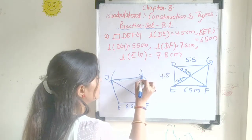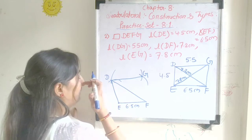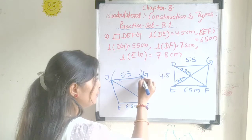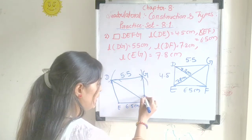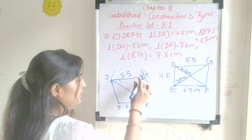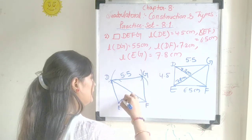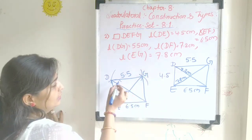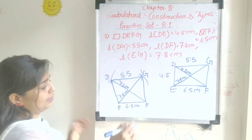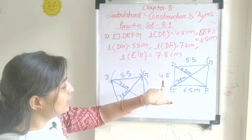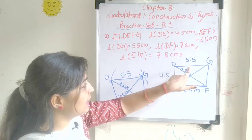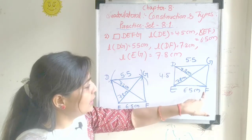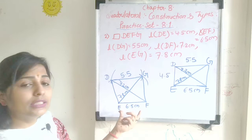The two points intersect, and that intersection is point G. We verify DG is 5.5 cm. We have drawn diagonal EG at 7.8 cm and diagonal DF at 7.2 cm. In this way, the quadrilateral DEFG was constructed using three sides — DG, DE, and EF — and two diagonals EG and DF.